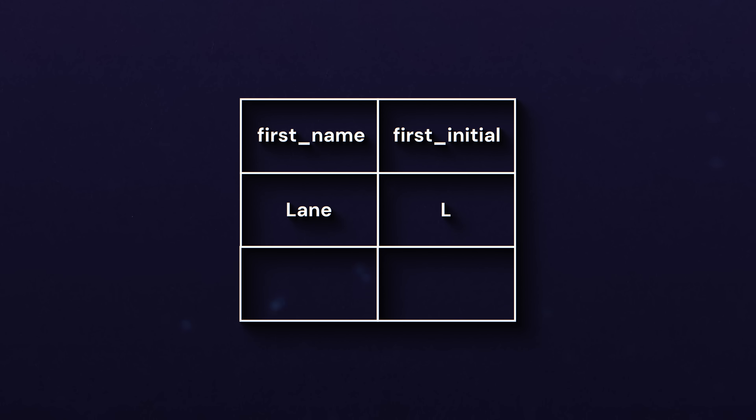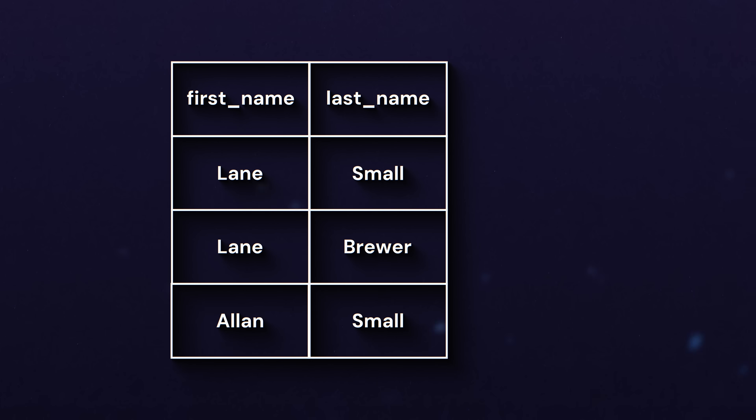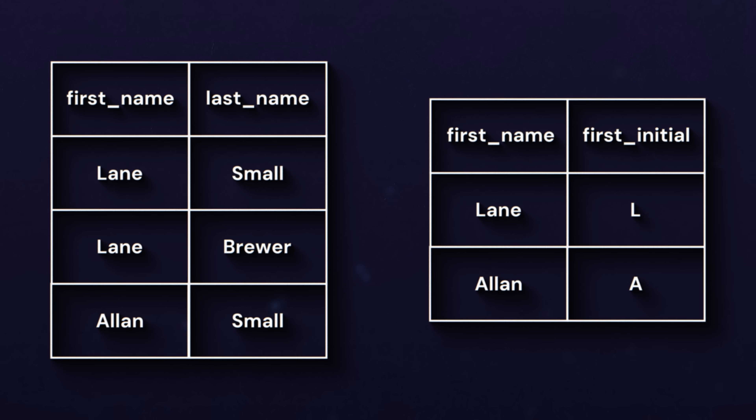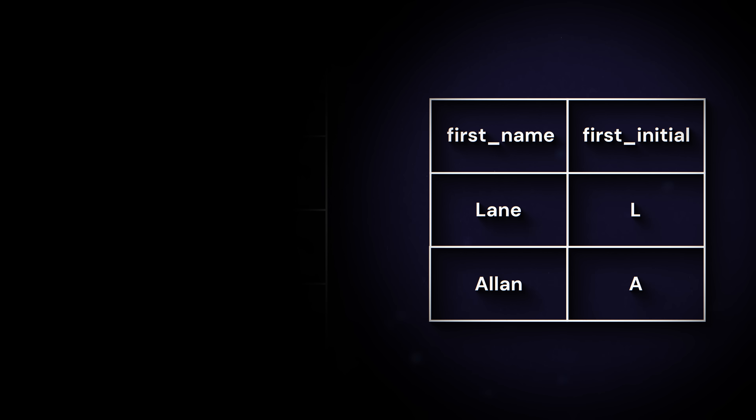So we've got Lane → L, Allen → A, and on our first table we just drop the first initial column. Now both tables follow the rules of second normal form — we don't have a duplicate mapping of Lane to L, we only store that relationship once. Now this may seem like a silly example — why would you store an initial alongside a name when you can just calculate it? But there are times in the real world where you will have a column that depends on another column, and rather than storing it many times, you can extract it out into another table.